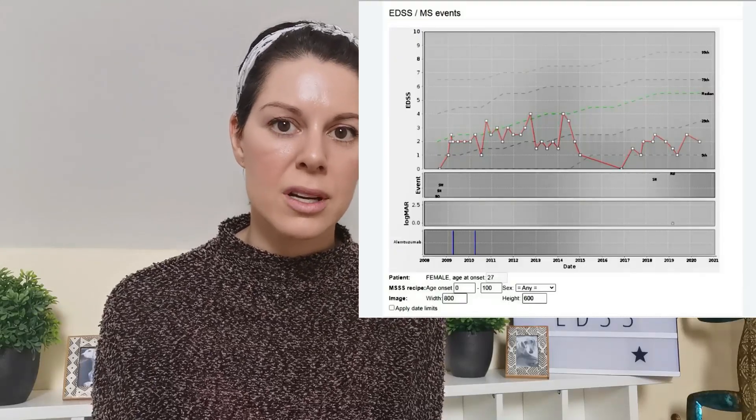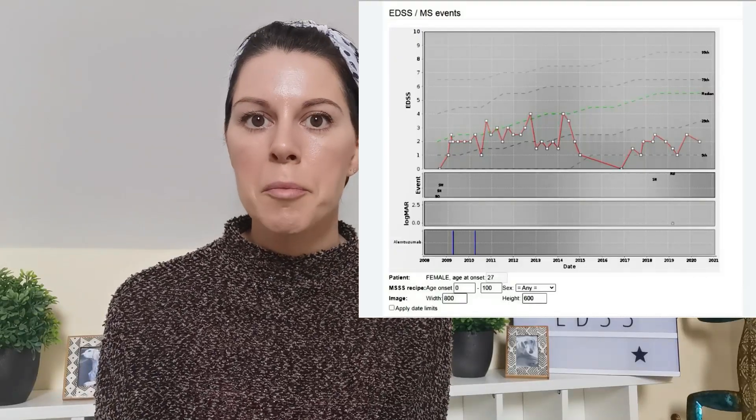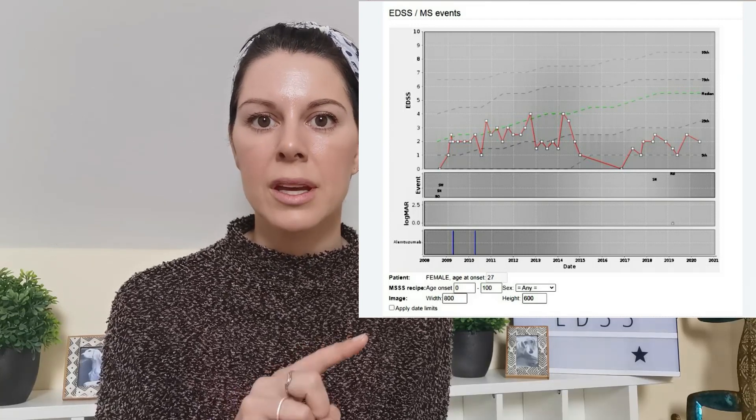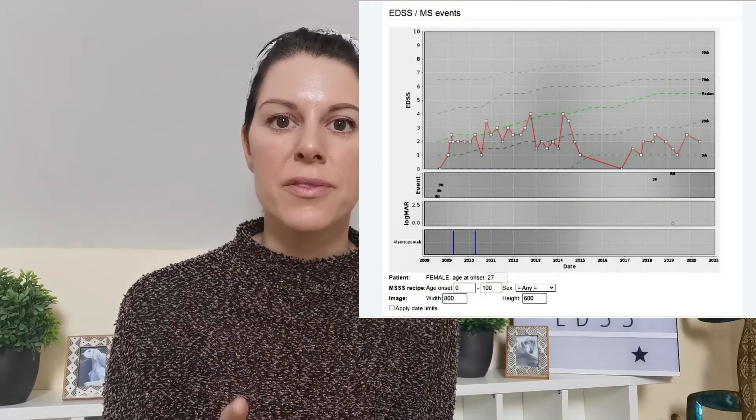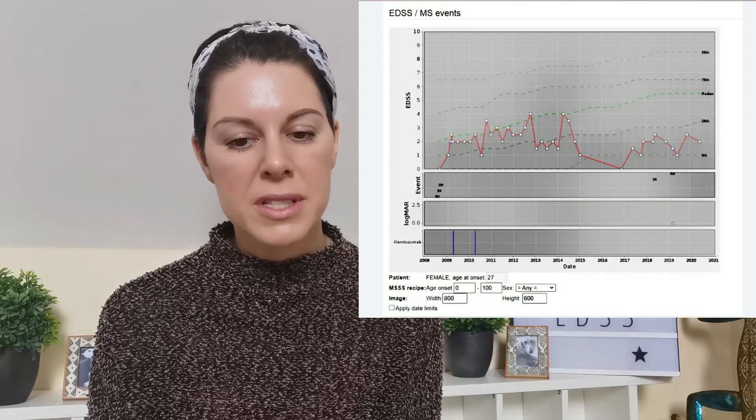Over that period the score came back down again as the stress went away. There were also periods on the chart where it fluctuated from 2.5 to 3 to 4, down to 3.5, down to 2, and even at times down to 1. But the important thing is that it stayed very steady on average over the 11 years.